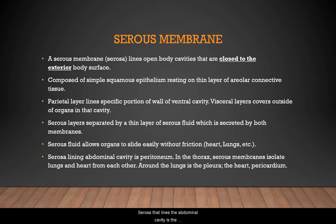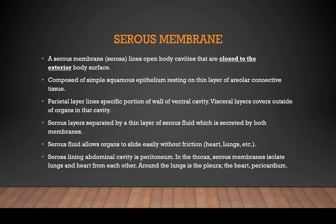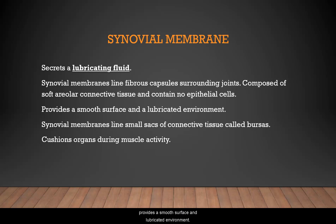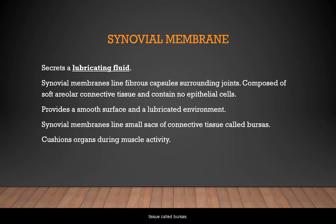The serosa lining the abdominal cavity is the peritoneum, and in the thorax, serous membranes isolate the lungs and the heart from each other — around the lungs is the pleura, and around the heart is the pericardium. The synovial membrane secretes a lubricating fluid and lines fibrous capsules surrounding your joints. Composed of soft areolar connective tissue with no epithelial cells, it provides a smooth, lubricated surface and also lines small sacs called bursas, cushioning organs during muscle activity.